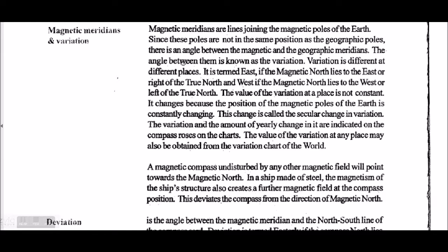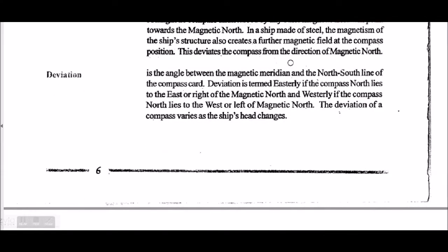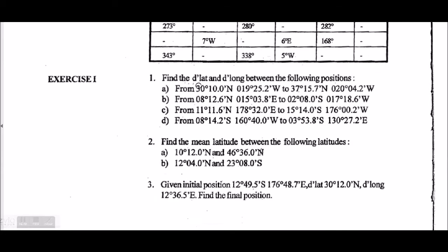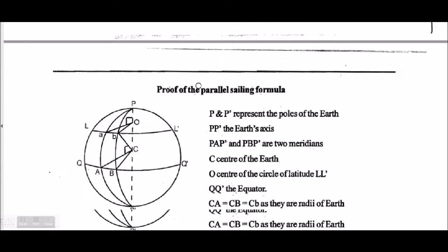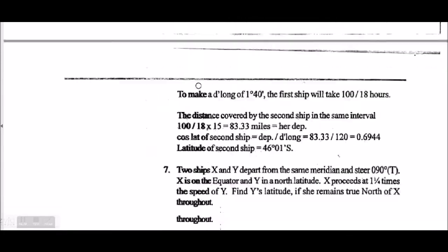Variation: since the magnetic poles are not in the same position as the geographical poles, there is an angle between the magnetic and the geographical meridian — that angle is known as variation. Deviation is the angle between the magnetic meridian and the north-south line of the compass card. Sometimes they ask these things. Compass errors — everyone knows how to do this using the CDM formula.